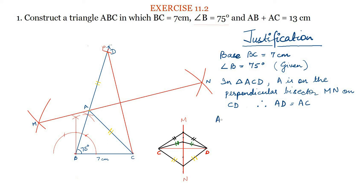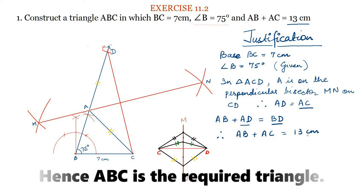From the figure, we can see that AB plus AD is equal to BD. Now, since BD is equal to 13 cm and AD is equal to AC, we can write AB plus AC is equal to 13 cm. Hence, ABC is the required triangle. Thank you.